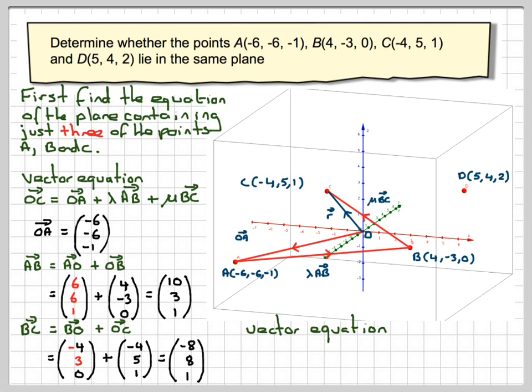So the vector equation will be: R is equal to vector OA, which is (-6, -6, -1), plus lambda times vector AB, which is (10, 3, 1), plus mu times (-8, 8, 1). So in the present setting, mu and lambda will be equal to 1. But remember, we move these, and that then generates all the other points in the plane. So we've now found our plane.